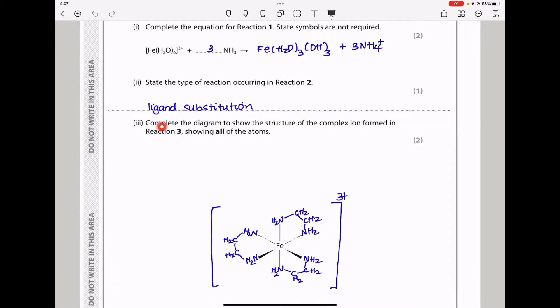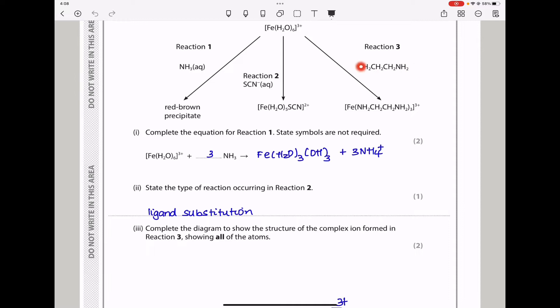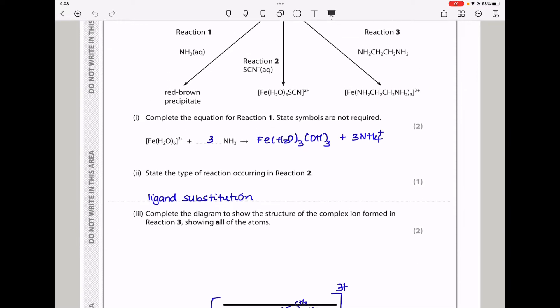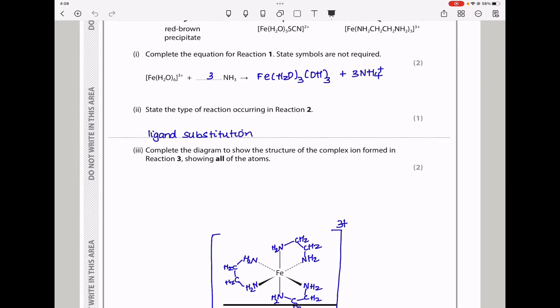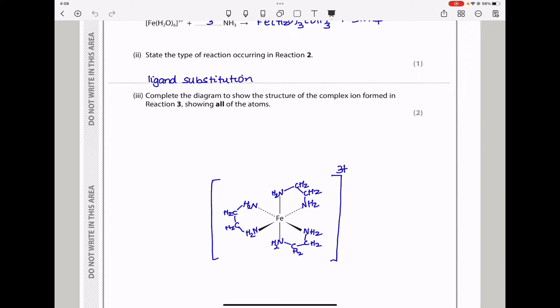Part 3 says, complete the diagram to show the structures of the complex ion formed in reaction 3, showing all the atoms. In reaction 3, we are using ethylenediamine as the ligand. That is a bidentate ligand. Since iron has coordination number 6, it means we are going to use 3 ligands.